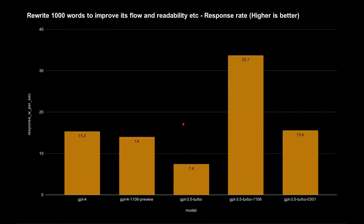Turning that into words per second: GPT-4 outputs 15.3 words per second, GPT-4 Turbo 14 words per second. GPT-3.5 Turbo struggled on that task. But GPT-3.5 Turbo 1106 achieved a remarkable 33.7 words per second. So of the three GPT-3.5 models, GPT-3.5 Turbo 1106 has had the highest response rate overall, and the March model came in at around 15 words per second.